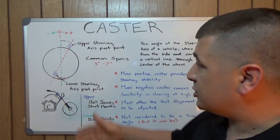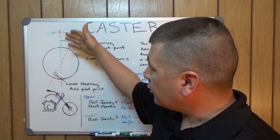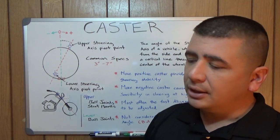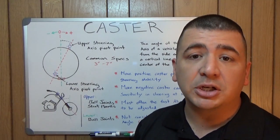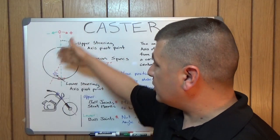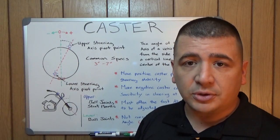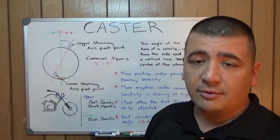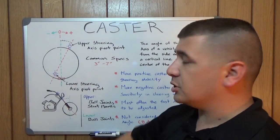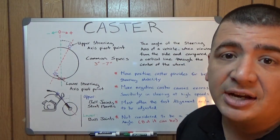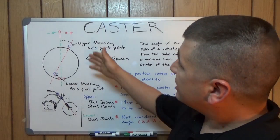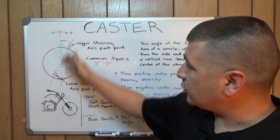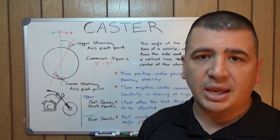Definition of caster is the angle of the steering axis of a vehicle when viewed from the side and compared to a vertical line drawn through the center line of the wheel. Now the last bit about the vertical line being through the center line of the wheel, that's just my personal preference. A vertical line anywhere is still vertical and the angle between the steering axis and that line never changes.